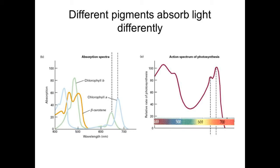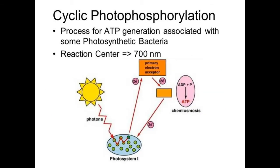Now, cyclic photophosphorylation — what is happening in the light reaction. In photosynthetic bacteria, the reaction center is P700 nm. Photons from light come through Photosystem I, and the primary electron acceptor is activated. ADP is converted into ATP via chemiosmosis. This cycle takes place in photosynthetic bacteria and is called cyclic photophosphorylation.